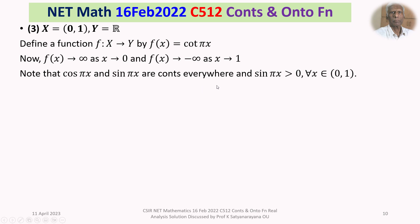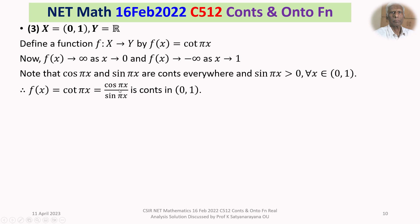Note that cot(πx) = cos(πx)/sin(πx). Both cos(πx) and sin(πx) are continuous everywhere. And sin(πx) is positive for all x in (0,1) — it never becomes 0 for any x in (0,1). Therefore the quotient of two continuous functions is again continuous, and the denominator is never 0 in this interval, so cot(πx) is continuous on the whole of (0,1).